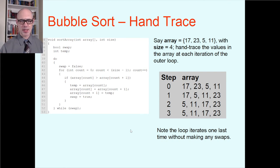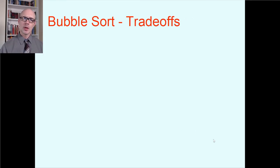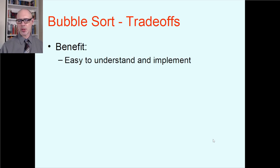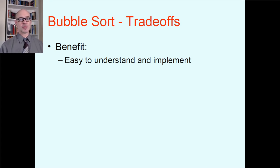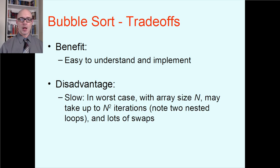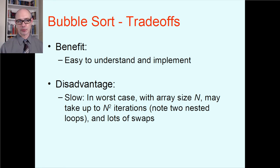Note the loop iterates one last time without making any swaps — that's bubble sort discovering the array is sorted. What are the trade-offs? Well, it's pretty easy to understand and implement — it's not very much code. On a random day if I just need to write my own sorting code, bubble sort is probably what comes out of my fingers. It's conceptually the very first thing I think of when thinking about sorting algorithms.